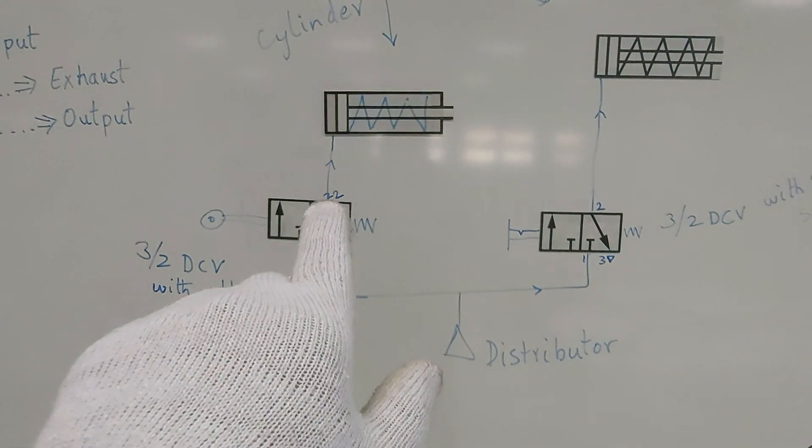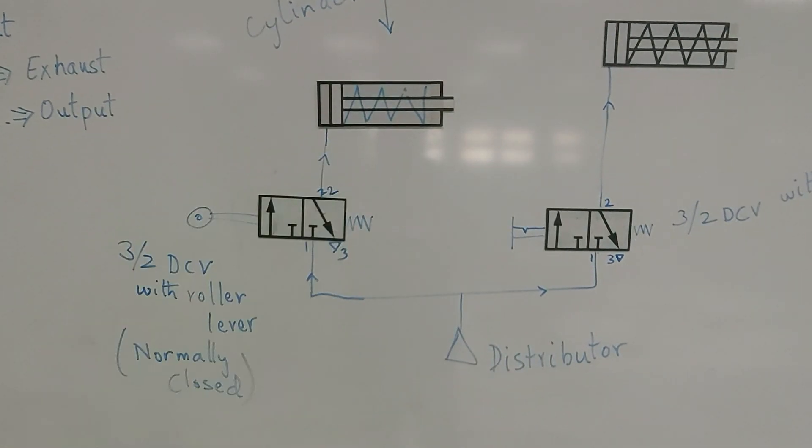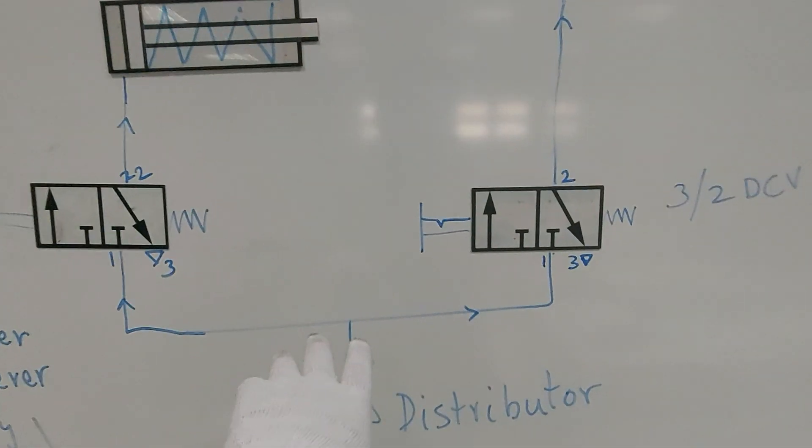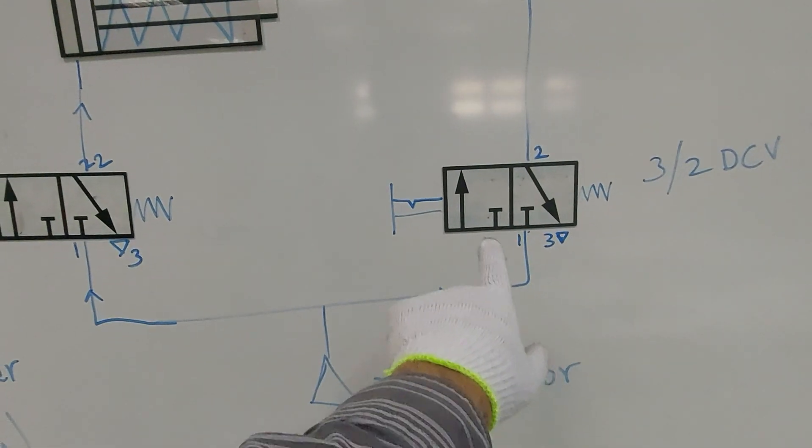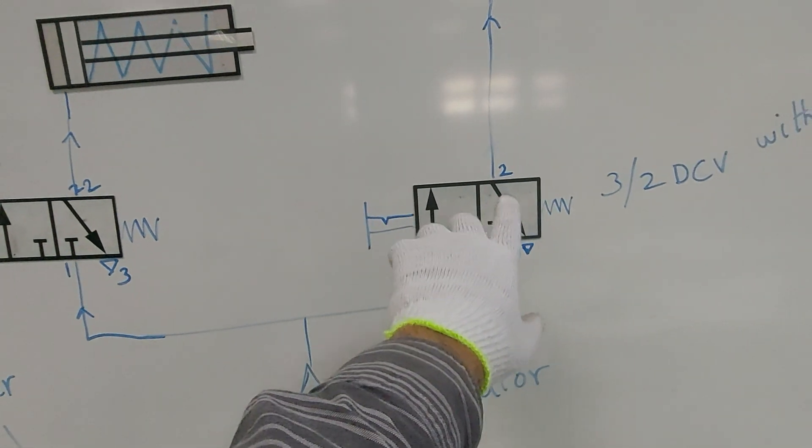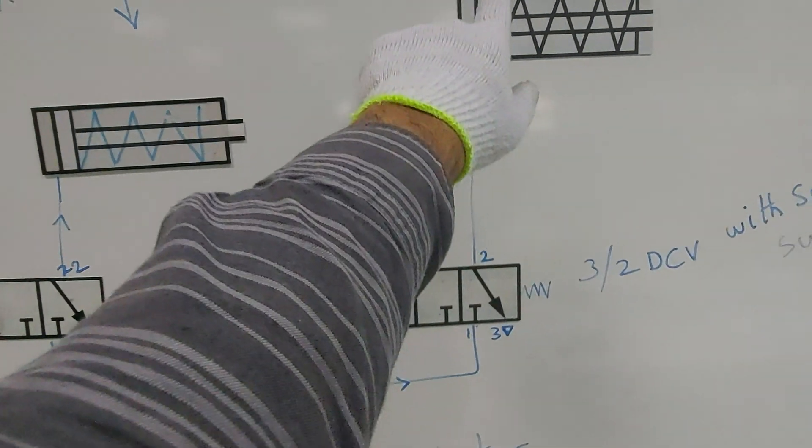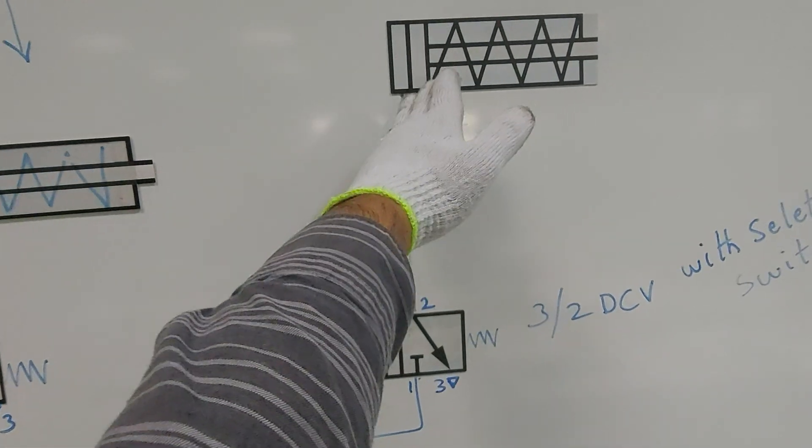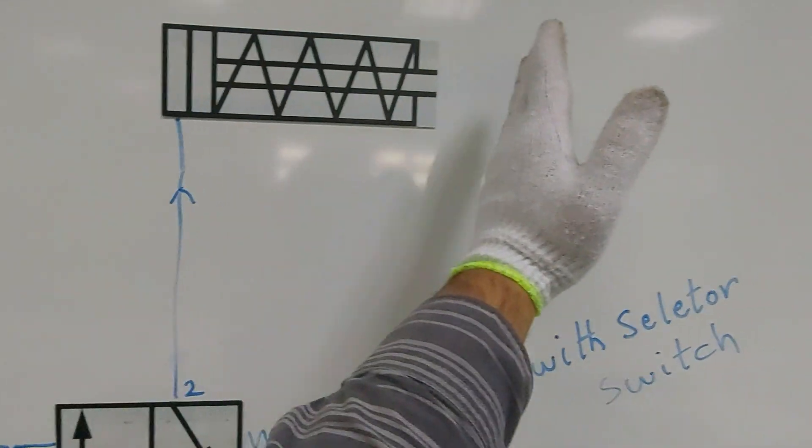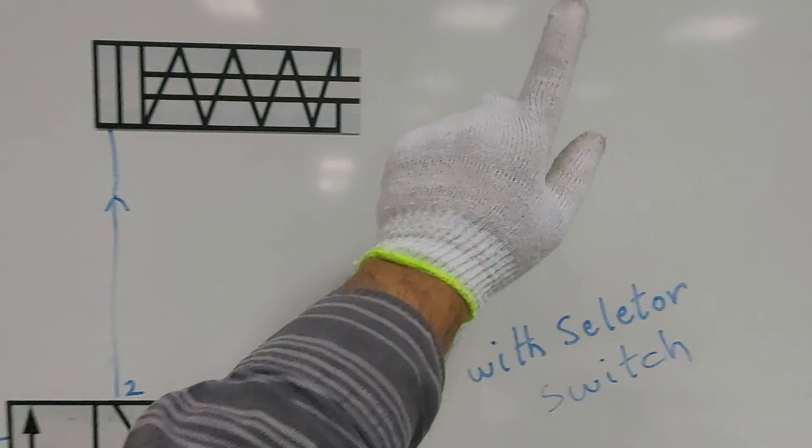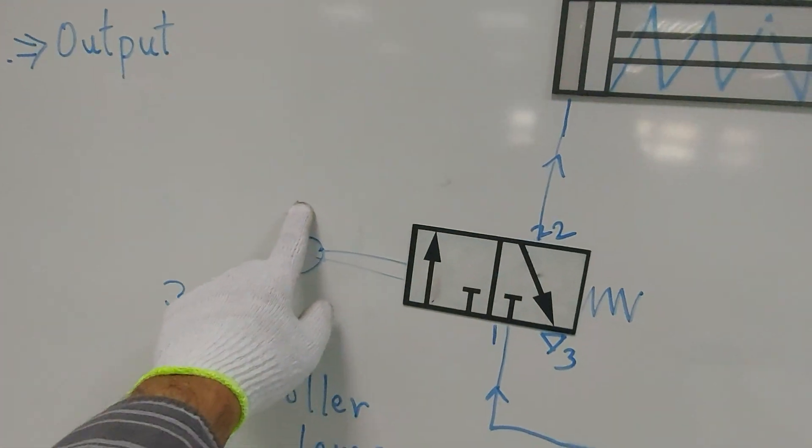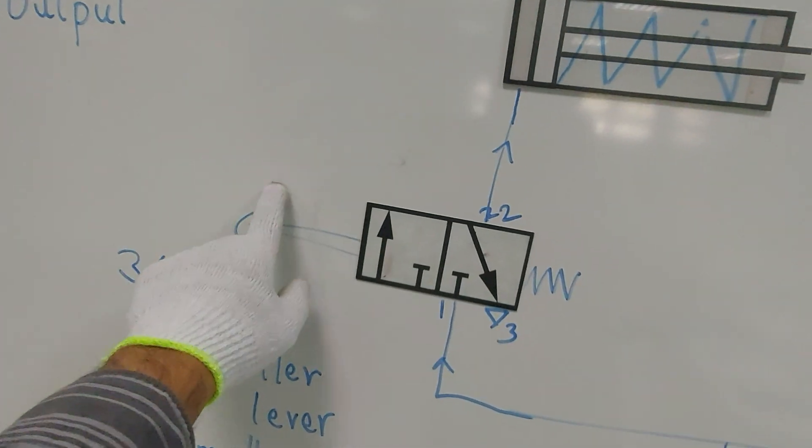What will happen is the distributor will supply air and it will go to the valve. If you activate the valve, it will supply to the cylinder and the piston will go out. Once it goes out, it will touch the roller and activate the roller, and the roller's position will change.